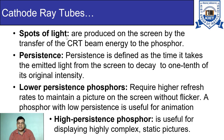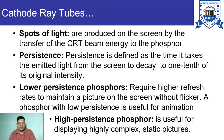Spots of light are produced on the screen by the transfer of CRT beam energy to the phosphor. The electrons carry kinetic energy, and this kinetic energy is transferred to the phosphor, which excites the electrons of the phosphor and a spot is produced.